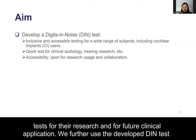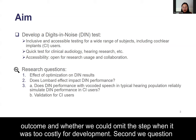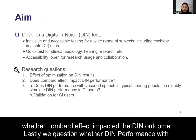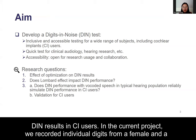We further developed DIN tests to investigate a couple of questions. First, we asked how much optimization would affect the DIN outcome and whether we could omit the step when it was too costly for development. Second, we questioned whether Lombard effect impacts the DIN outcome. Lastly, we questioned whether DIN performance with CI simulations in typical hearing listeners could predict CI results in DIN tests. Then, we validated DIN results in CI users.